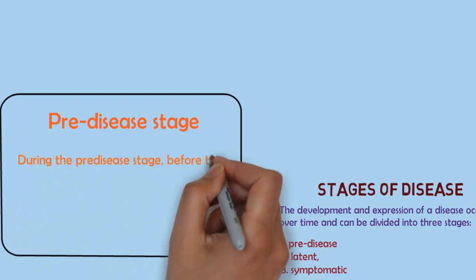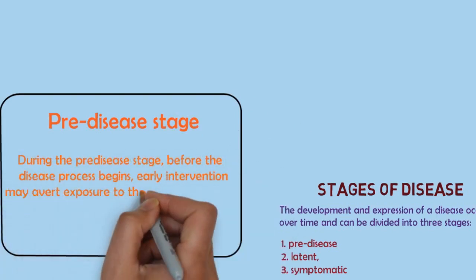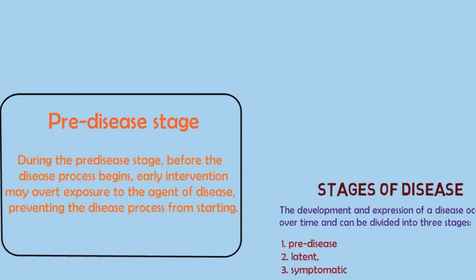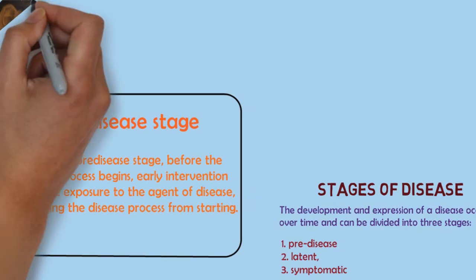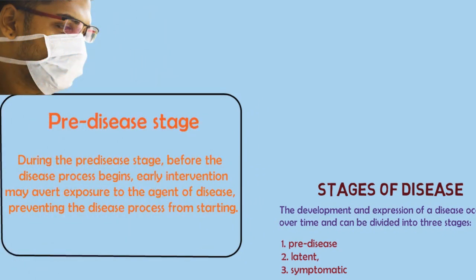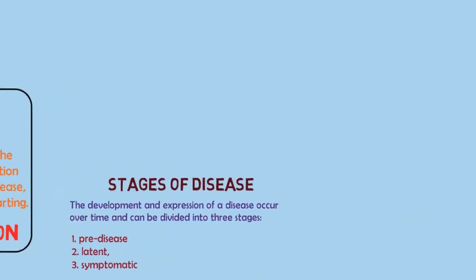During the pre-disease stage, before the disease process begins, early intervention may avert exposure to the agent of disease, preventing the disease process from starting. This is called primary prevention.